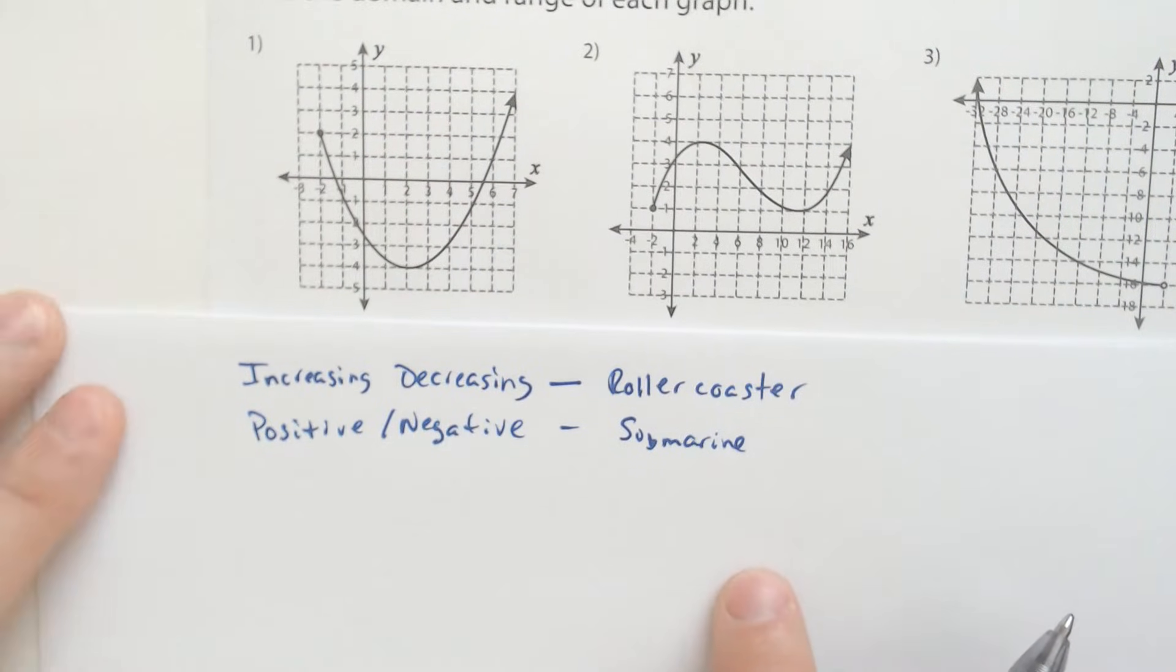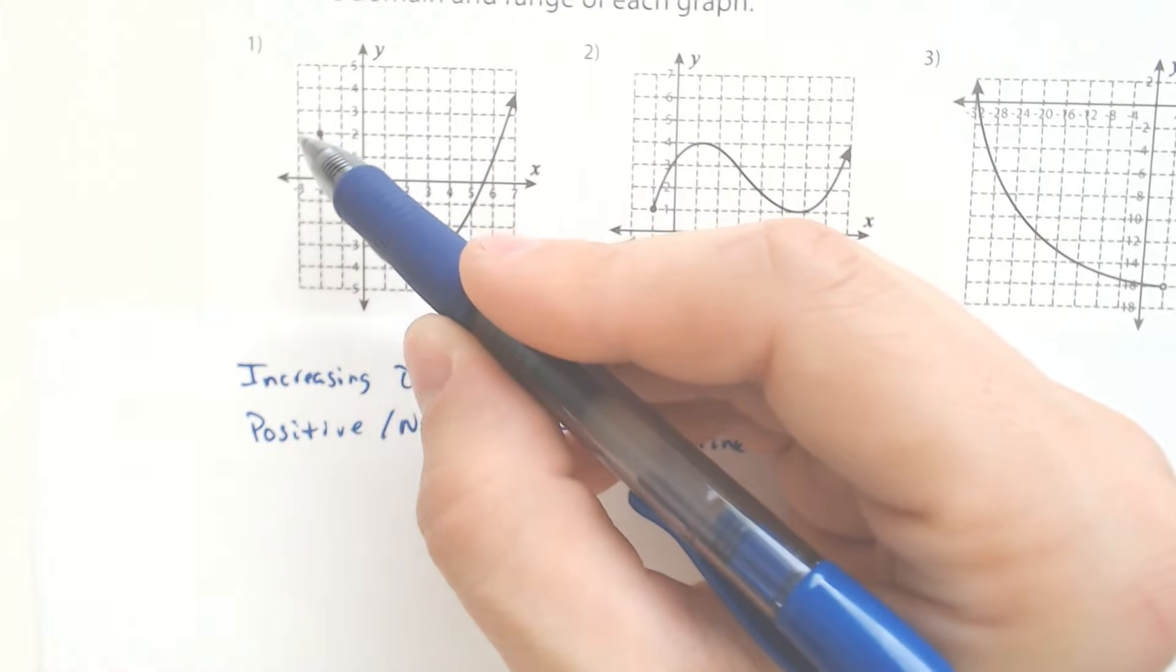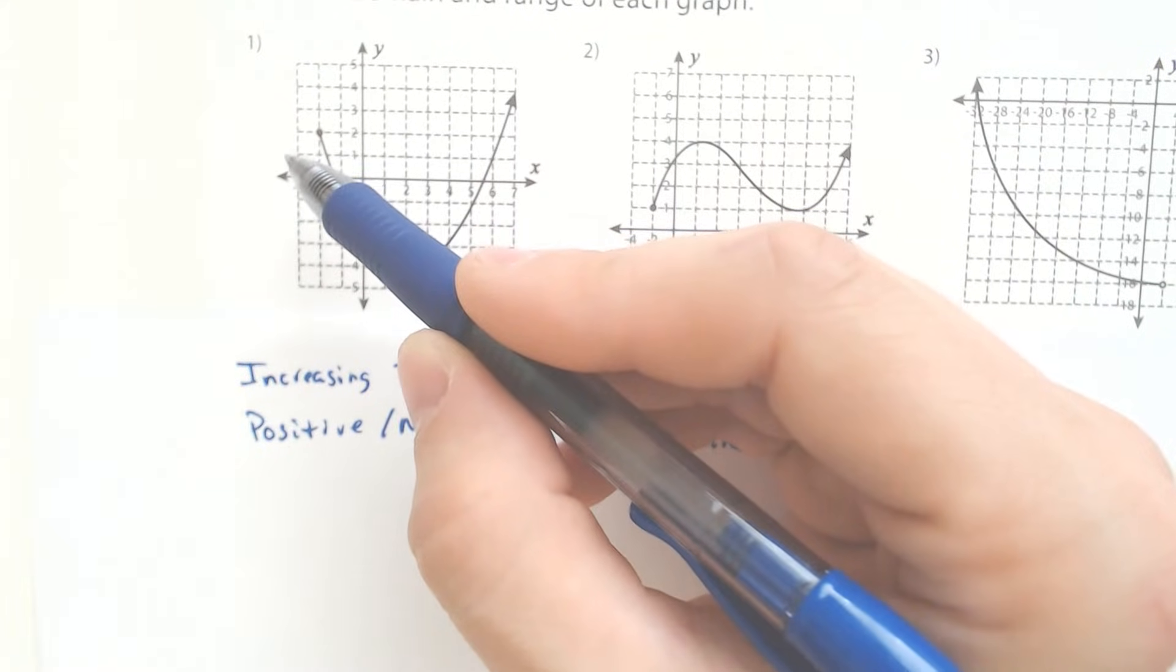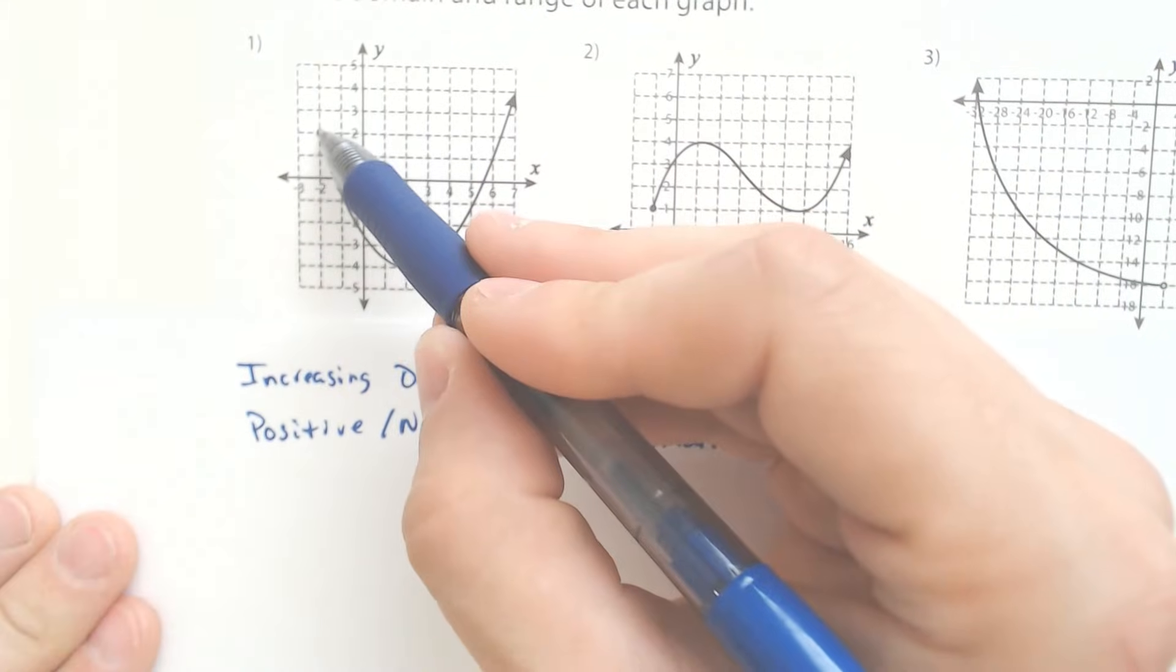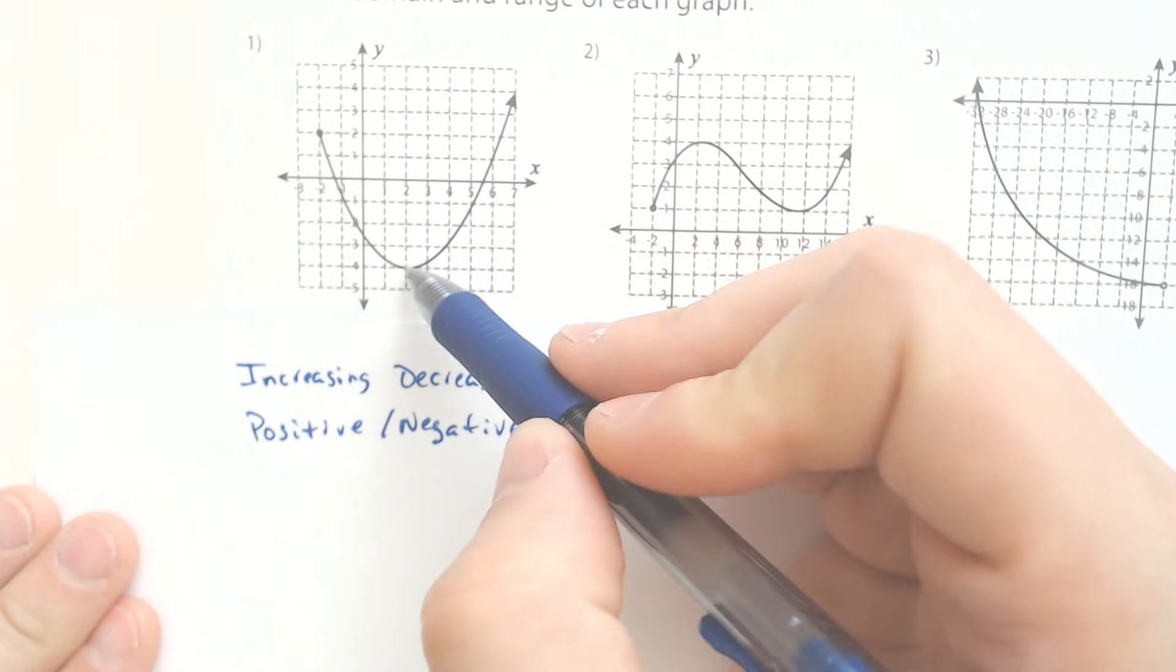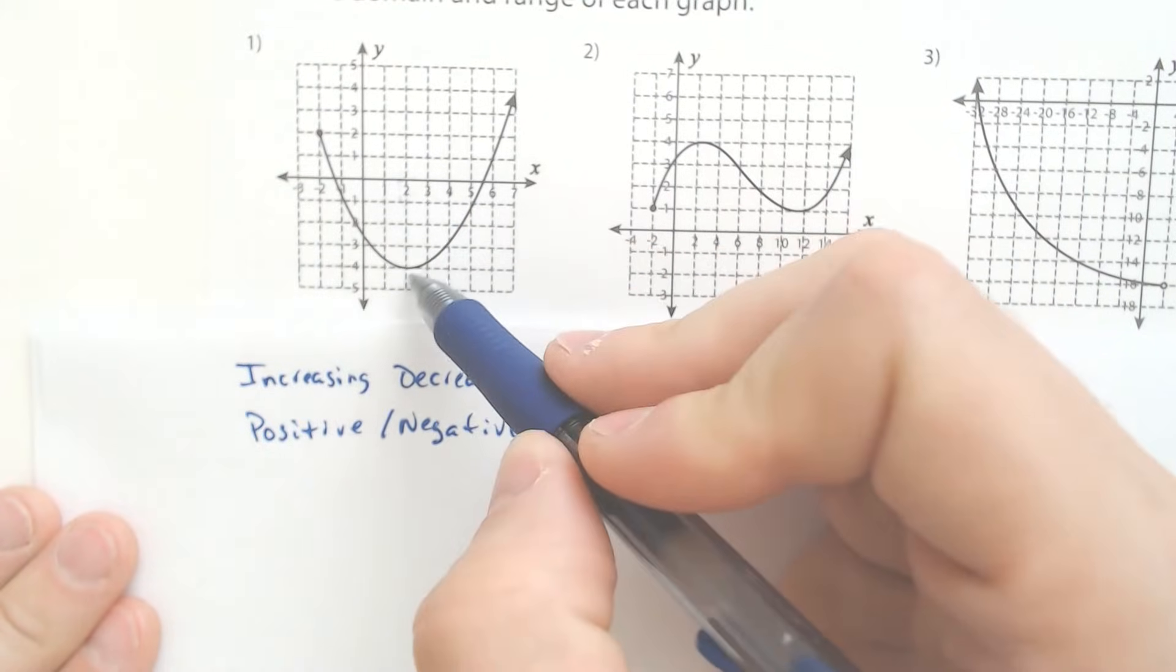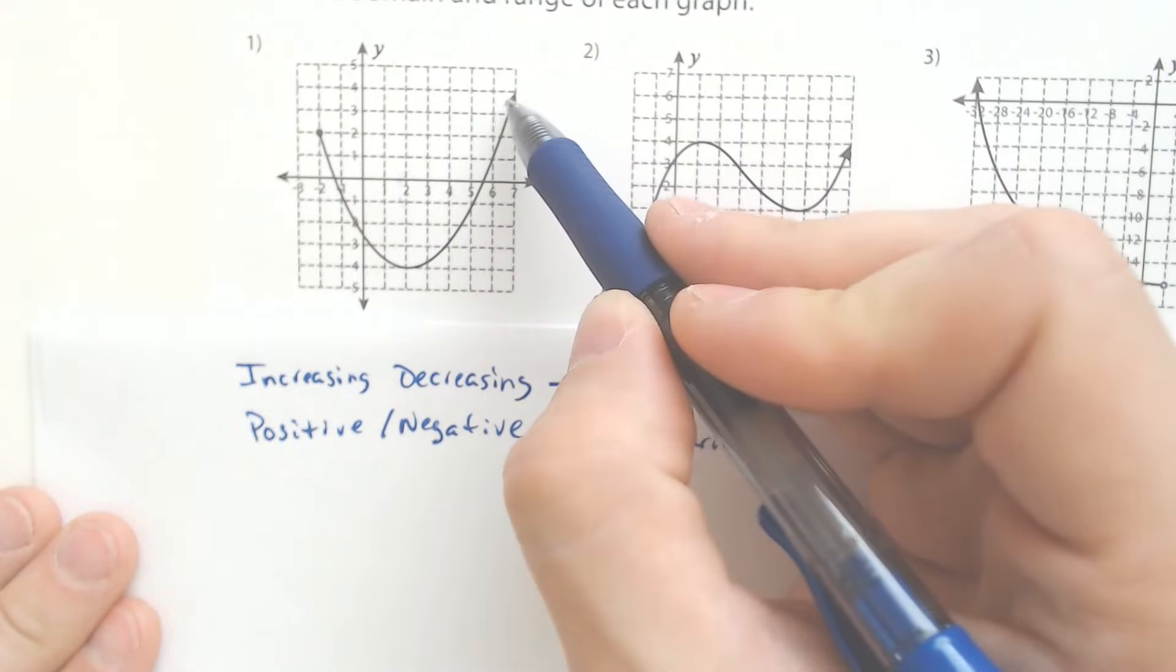So here we go. We have this graph. We're going to start with the increasing and decreasing where it is on a roller coaster. We are going down first. We're going down up until this moment, which is at two. That is the time in which we stop going down and then start going back up.